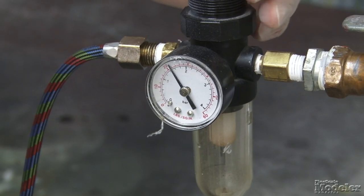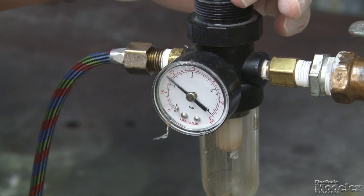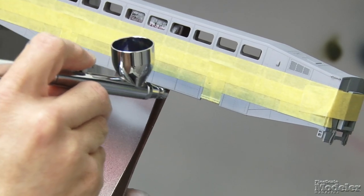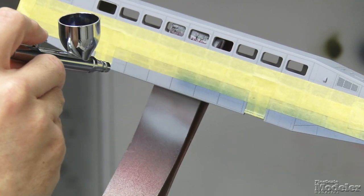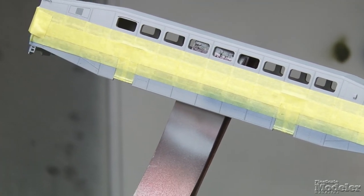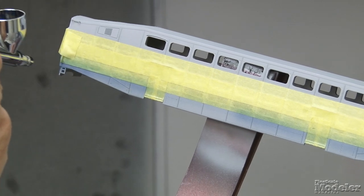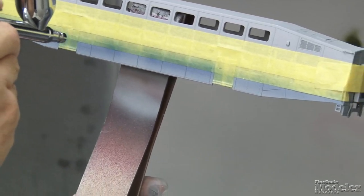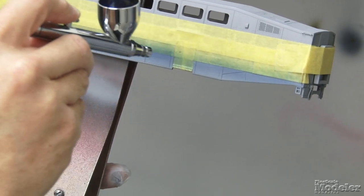So I'm going to dial this down to just below 20. Gives me a spray pressure of about 15 PSI. The other thing you want to do is always keep the brush perpendicular to the surface so that you're not blowing paint back up under the masks.